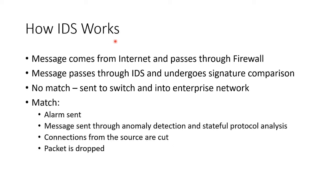How does it work? Something comes through the internet, goes through the firewall, then goes through the IDS. The IDS compares it — just like an antivirus — to signatures that it has. If there's no match, the traffic can go through into your enterprise network. If there is a match, an alarm is sent through anomaly detection and stateful protocol analysis. Connections from the source are cut and the packet is dropped.